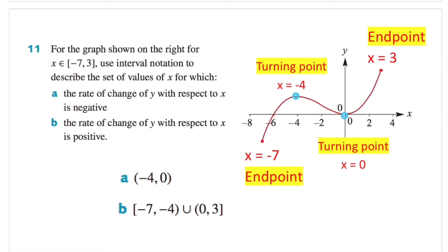The last question from 16A: for the graph shown, where x is an element of negative 7 to 3, use interval notation to describe the set of values of x for which: A, the rate of change of y with respect to x is negative, and B, the rate of change of y with respect to x is positive. Remember the Spidey on the plane? For which part of the graph will Spidey be climbing up the slope? When Spidey is climbing up the graph, the rate of change is positive. Between x equals negative 7 and negative 4, Spidey is climbing up, and also from 0 to 3. When is Spidey sliding down? That's between negative 4 and 0.